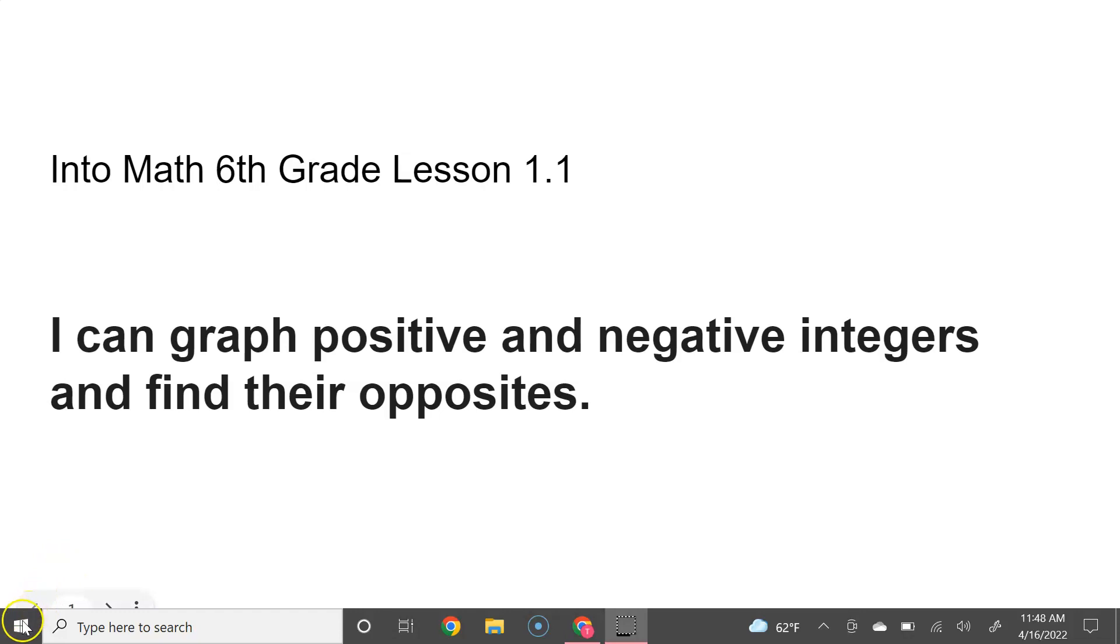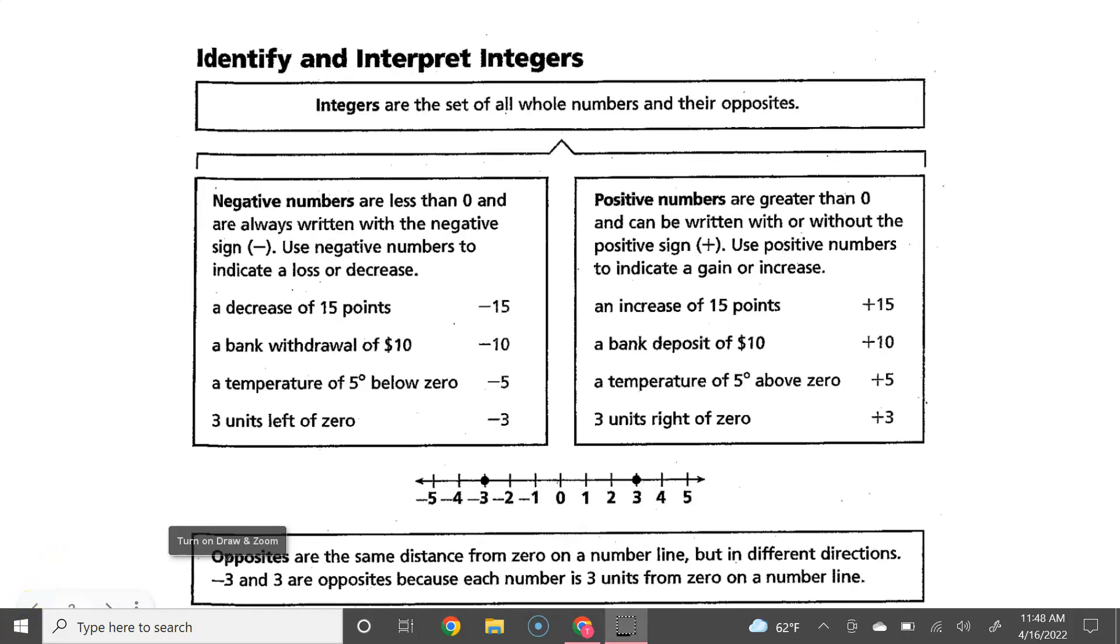Let's review some vocabulary. Integers are the set of all whole numbers and their opposites. If we look at the number line here, you can see that integers include positive numbers to the right of zero on a number line, and negative numbers to the left of zero on the number line.